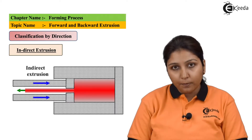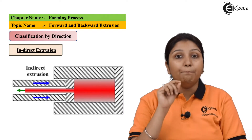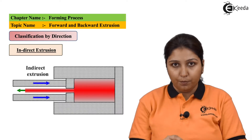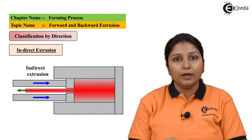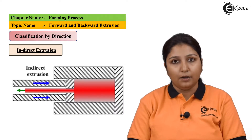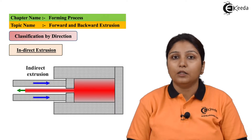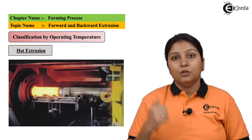Again, if you want to make a hollow object, you have to keep a billet at the opening so that a hollow object can be made — an object in the form of a pipe or any other kind of tube.